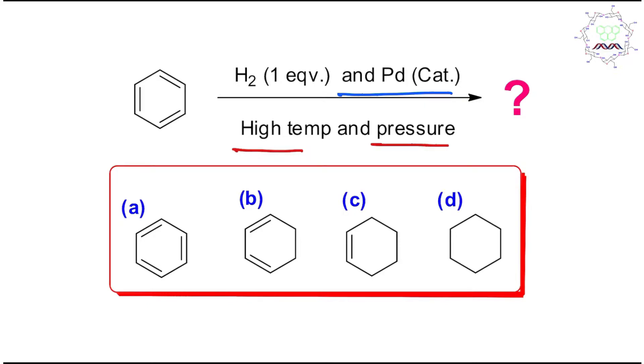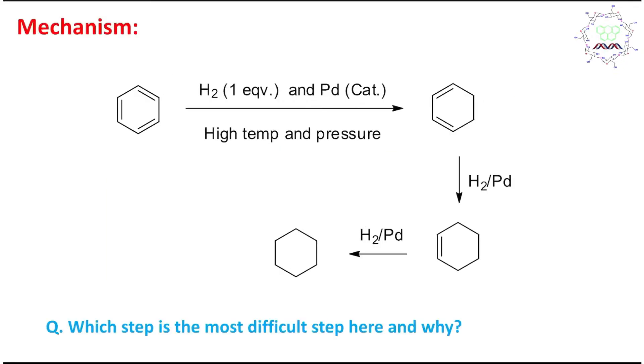A simple thing we expect: hydrogen and palladium means hydrogenation, and one equivalent hydrogen is given, so one double bond will be reduced in the product. No, students, the picture is not that simple actually.